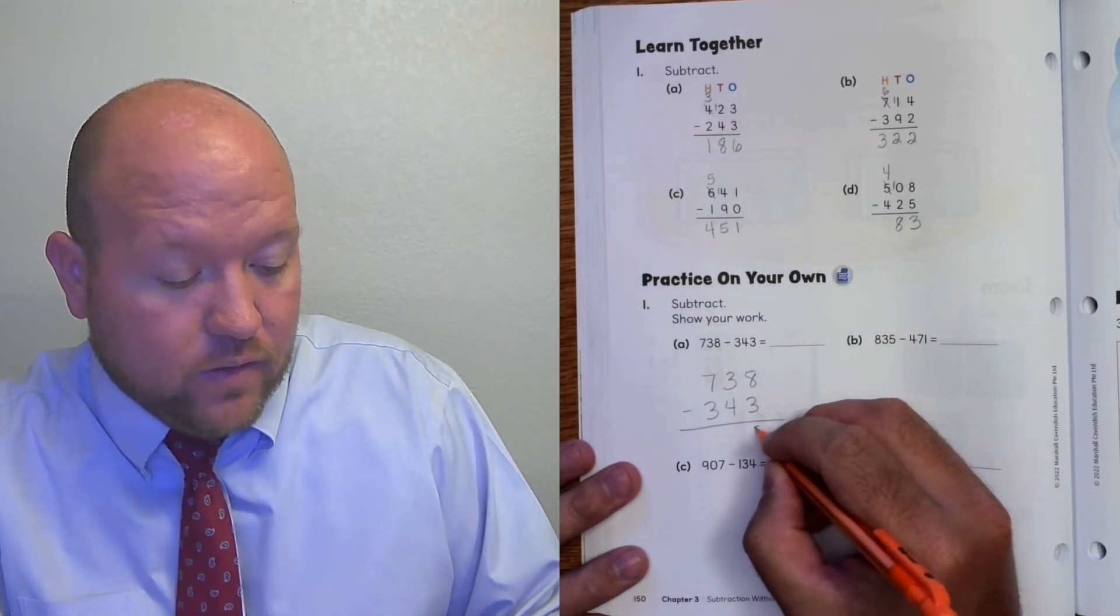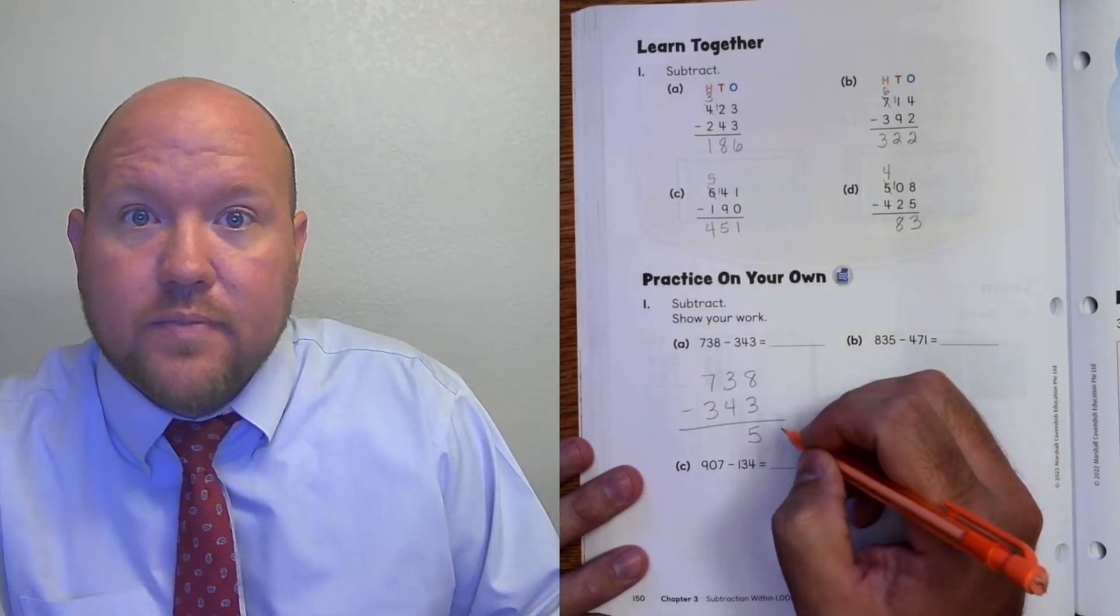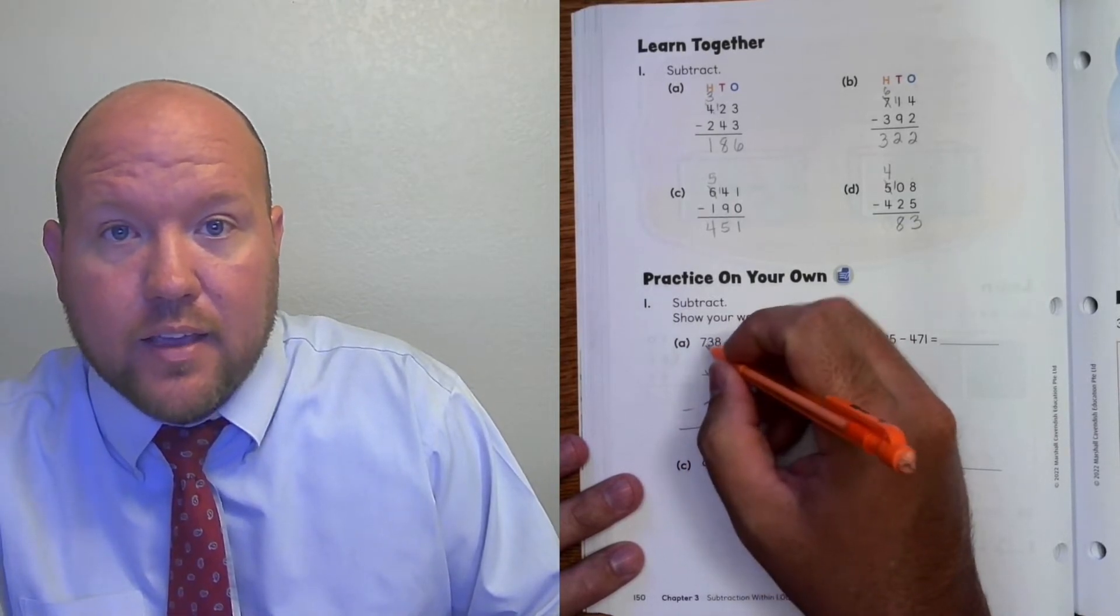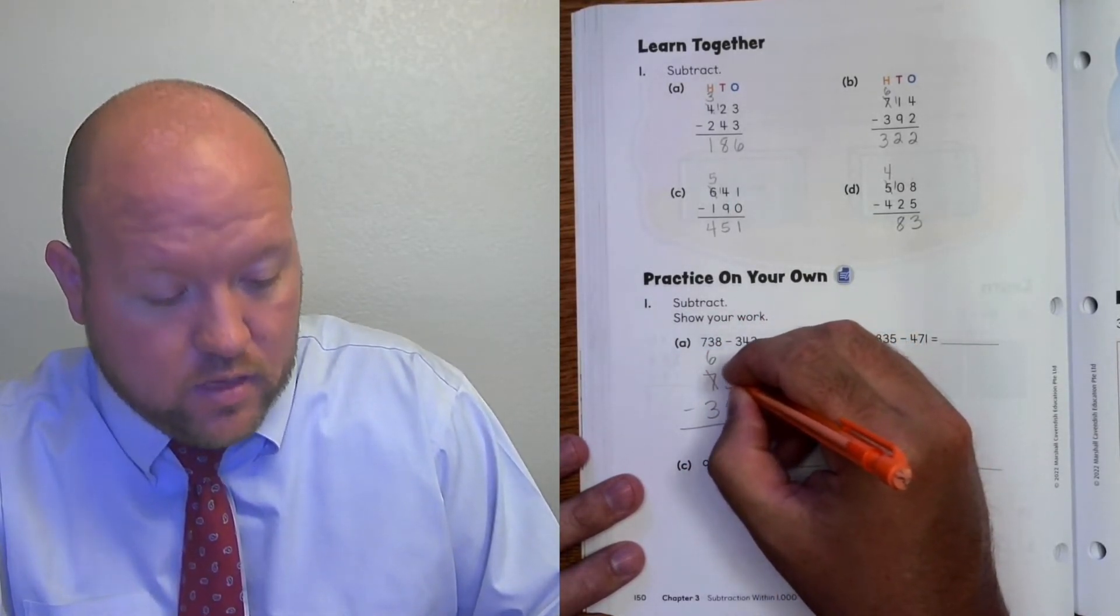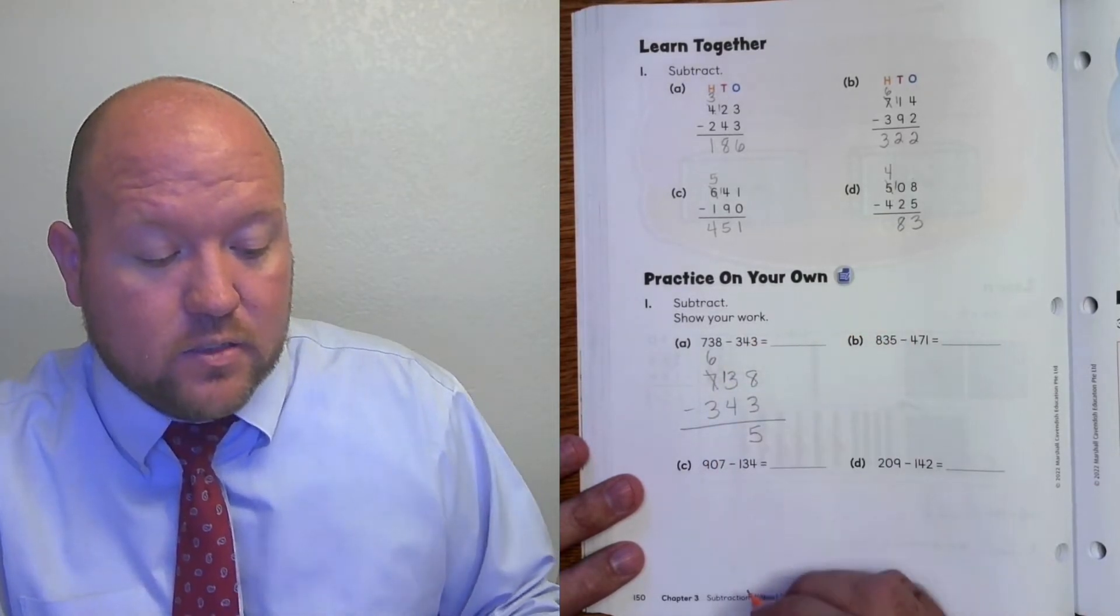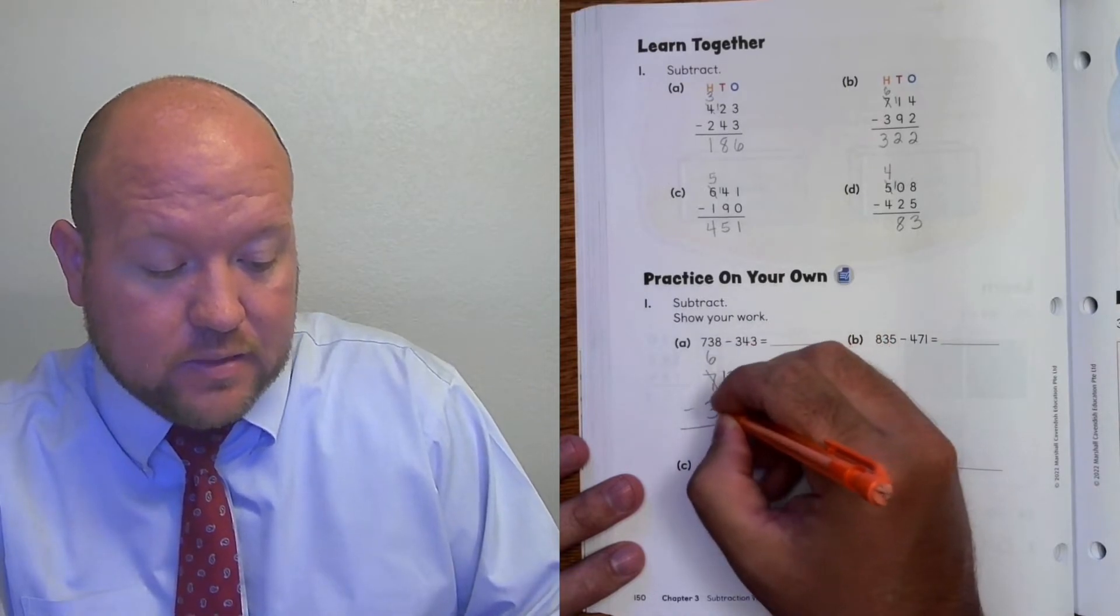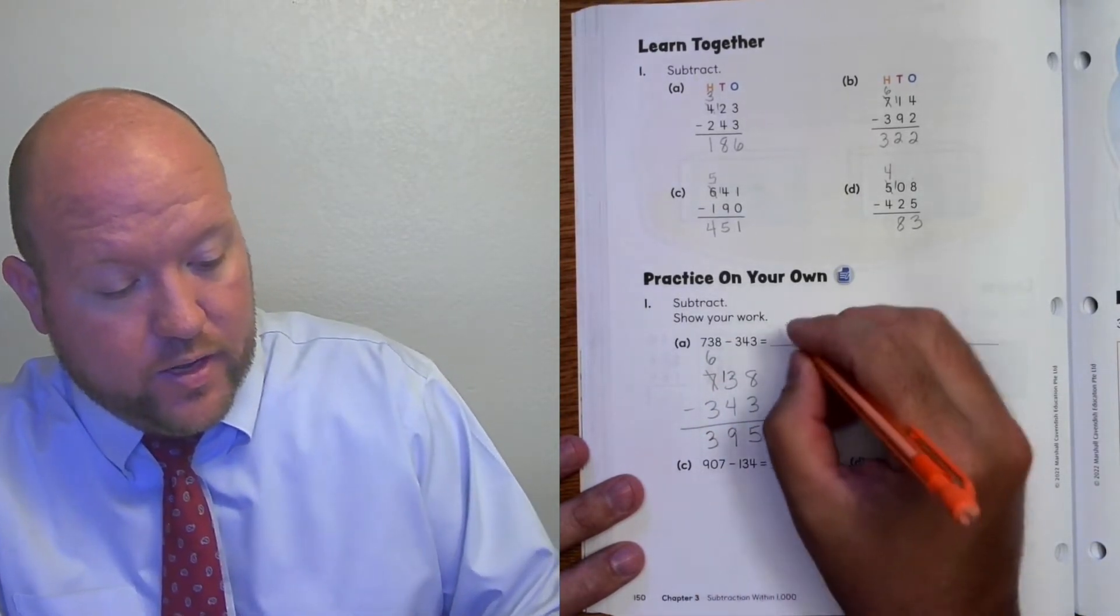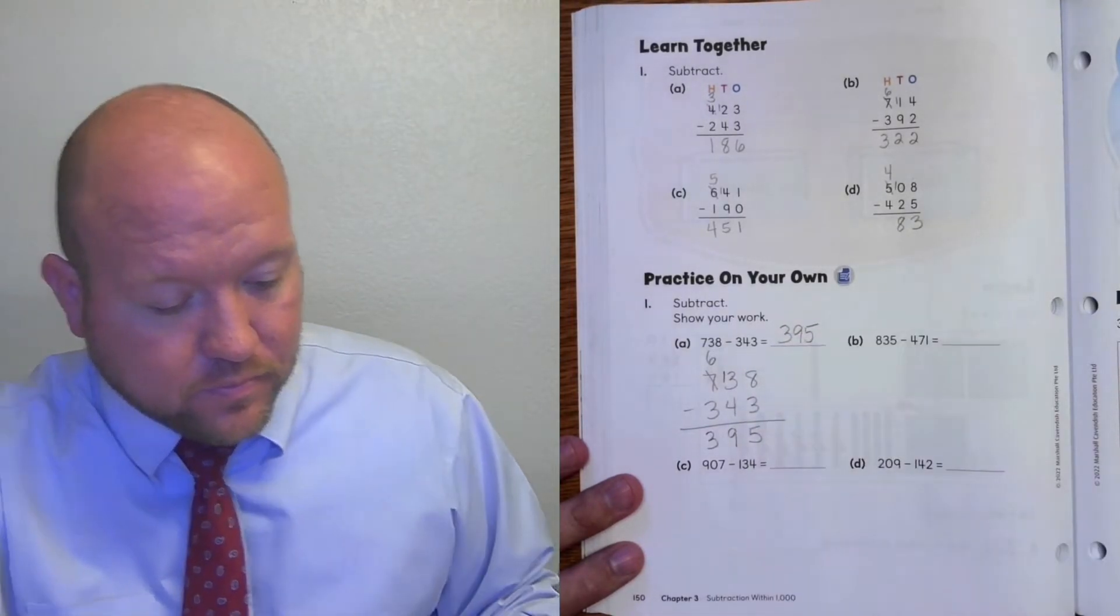8 minus 3 is 5. 3 minus 4 is a negative. So I need to regroup. Cross out the 7. It becomes a 6. And the 3 becomes 13. 13 minus 4 is 9. And 6 minus 3 is 3. And the answer is 395.